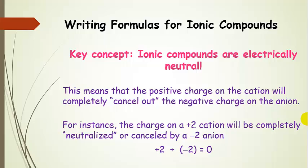For instance, if we had a plus 2 cation and we bonded it to a negative 2 anion, then that charge would completely cancel out. Just showing it mathematically: here's our cation charge, and if we add our anion charge, we add those two together, we get zero. So that means the charge is all canceled.